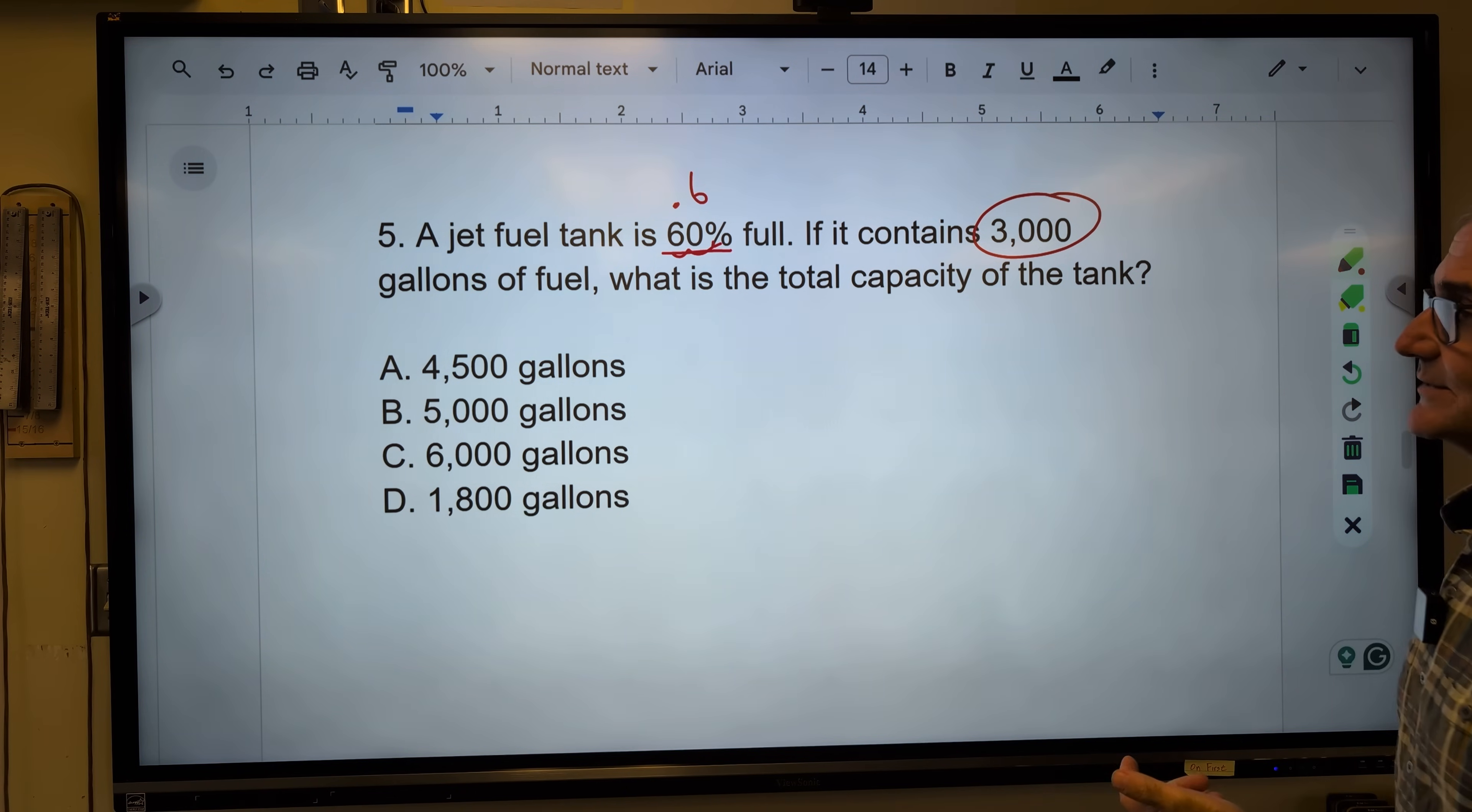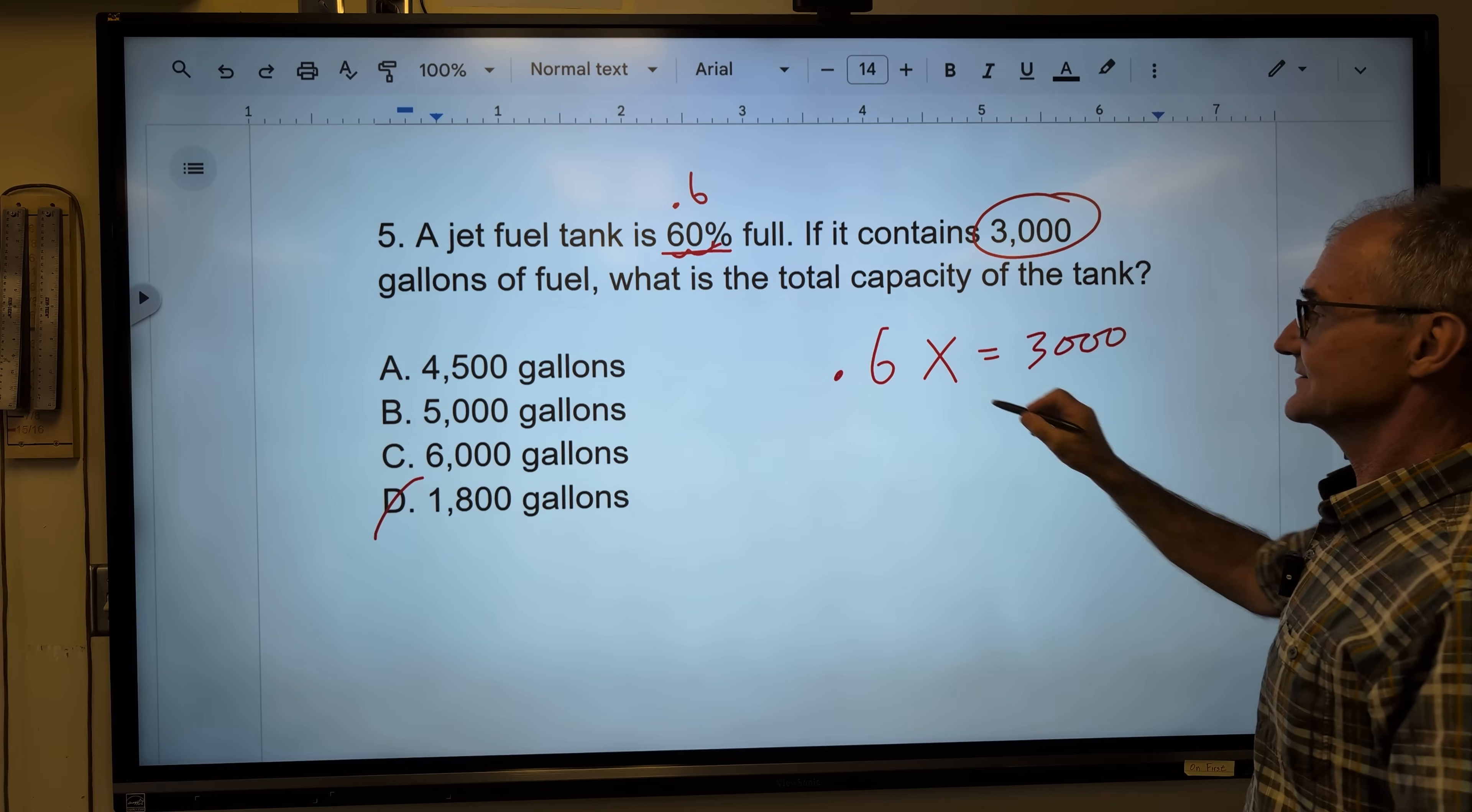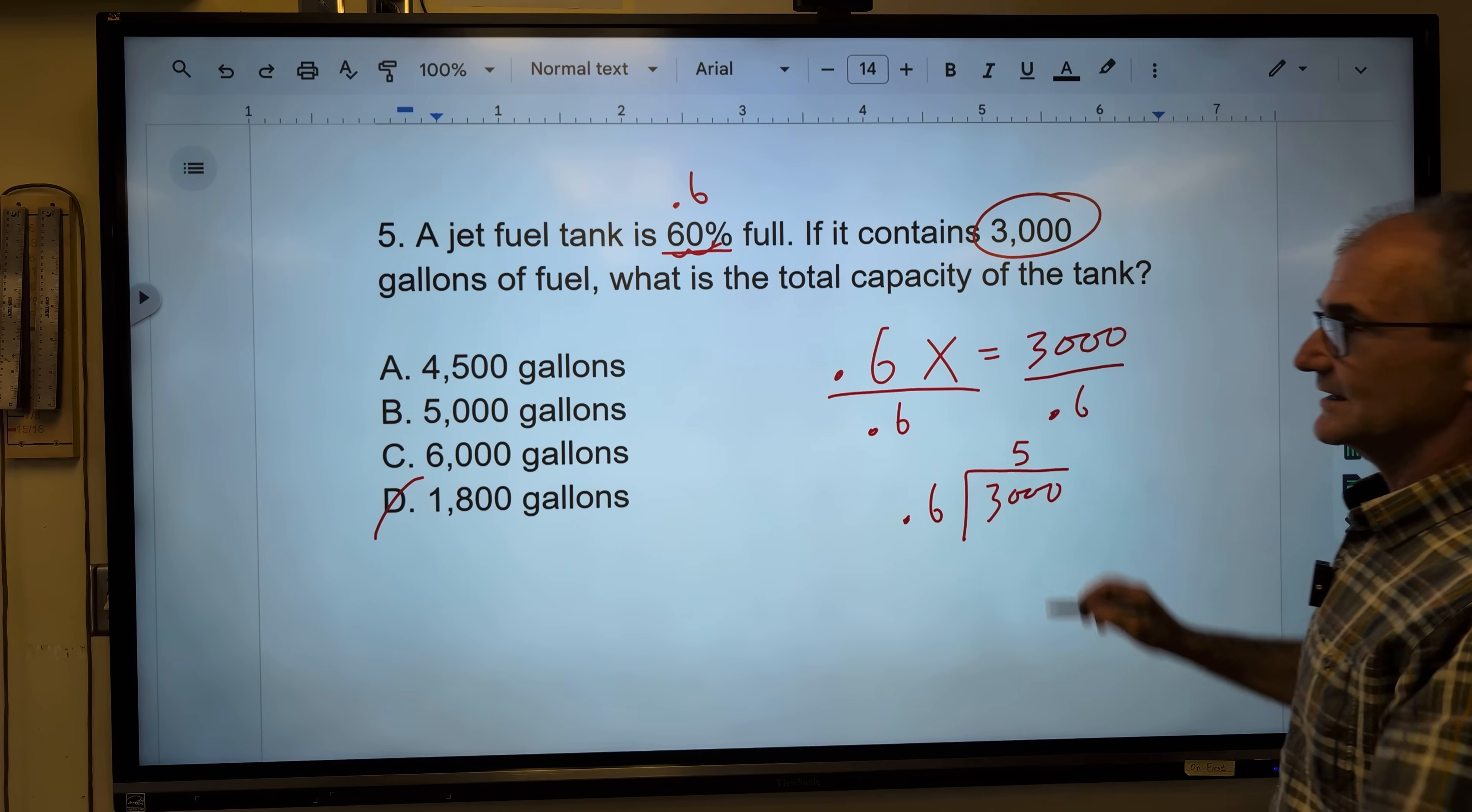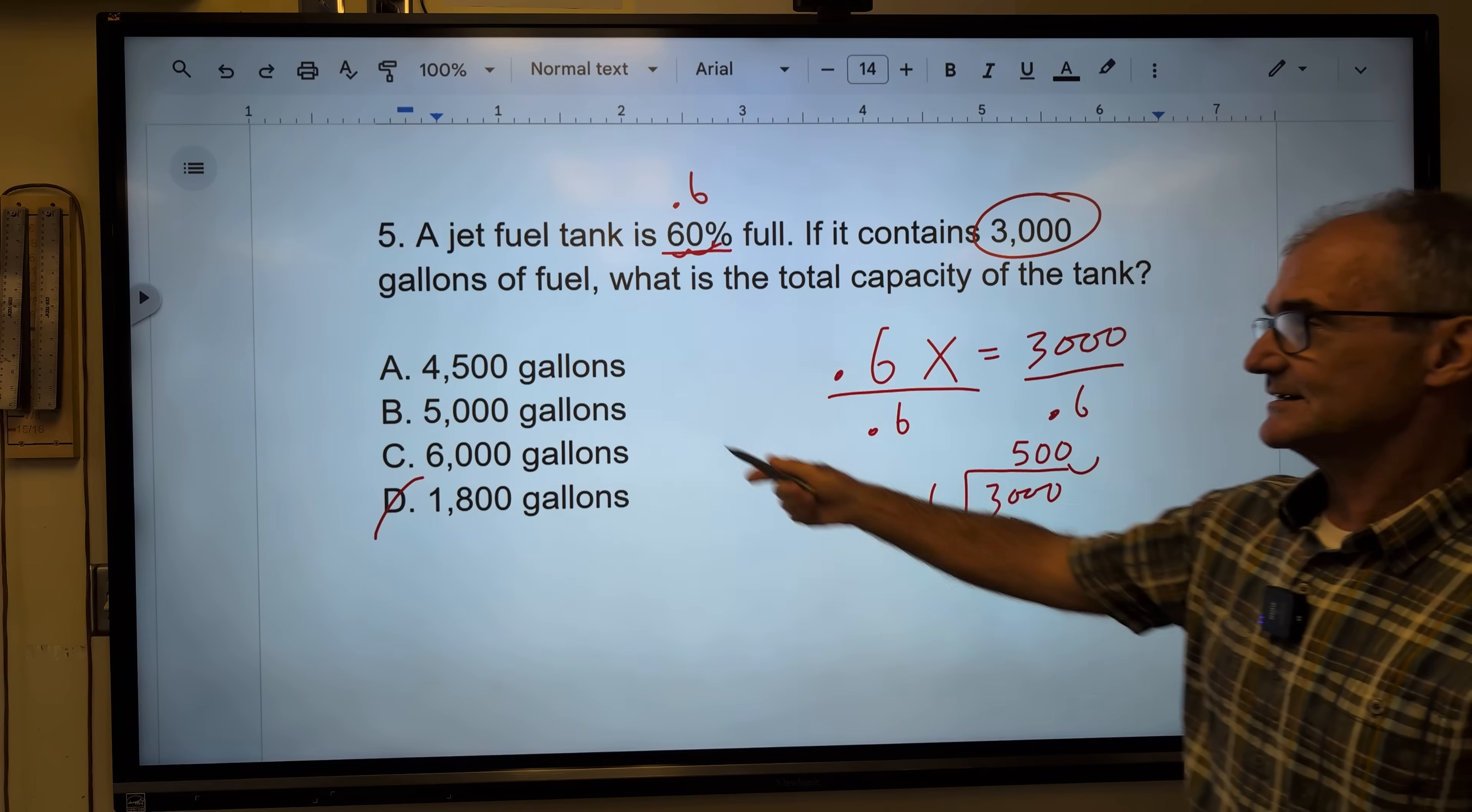Well, I know it can't be this one. I can eliminate that. So it's going to be some amount. I'm going to call it X times that ratio of 0.6. And that's going to be equal to 3,000. I divide both sides by 0.6. 3,000 divided by 0.6. Six goes into here five times. Only one up there with the five in it is B. I go straight to answer B. Correct answer. Five times six gives me the 30. Bring down the zeros. It's 5,000 gallons. Correct answer, answer B.